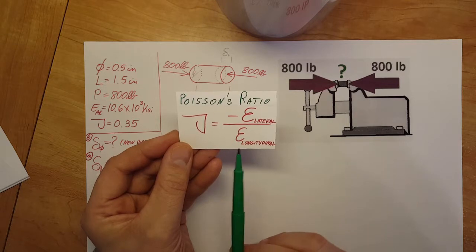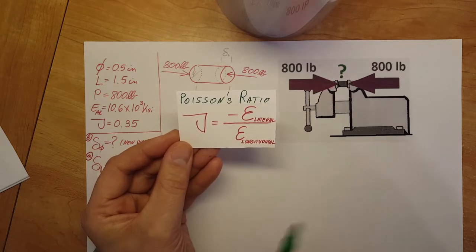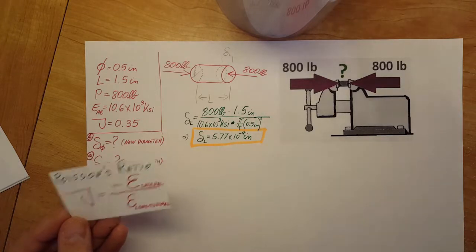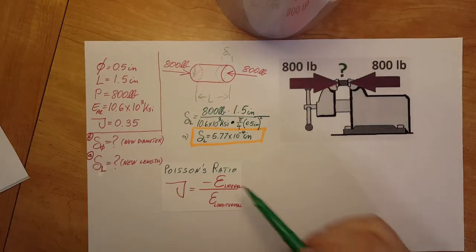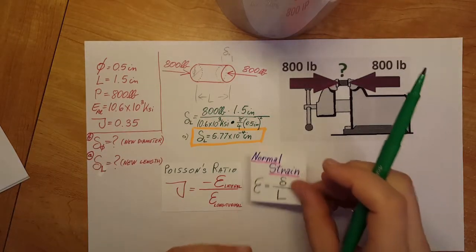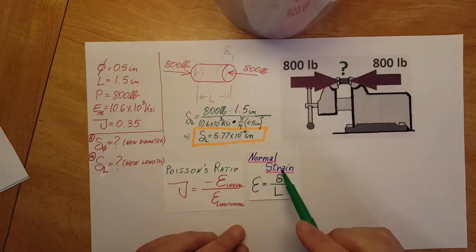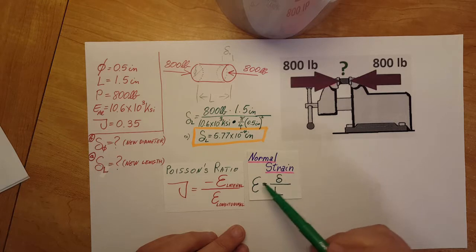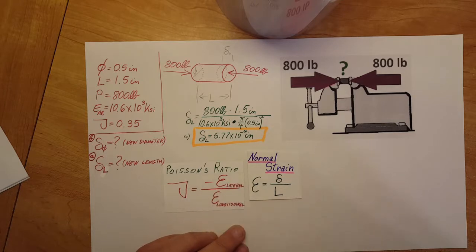And here's the Poisson's ratio formula where nu equals the negative of the strain in the lateral direction over the strain in the longitudinal direction. This is what we're going to use to help us find the change in diameter. When I plug into Poisson's ratio, I'm also going to use the normal strain formula, which is strain equals the deformation over the original length.